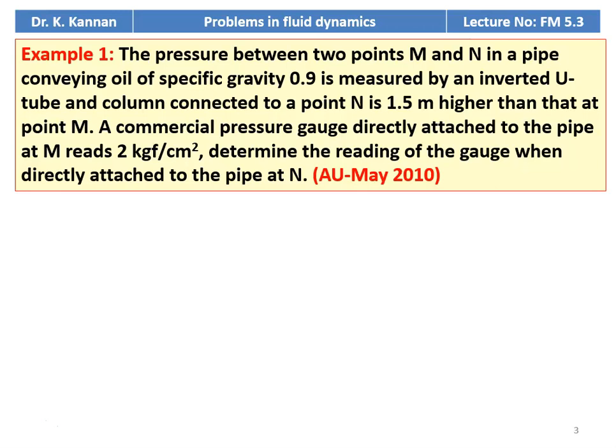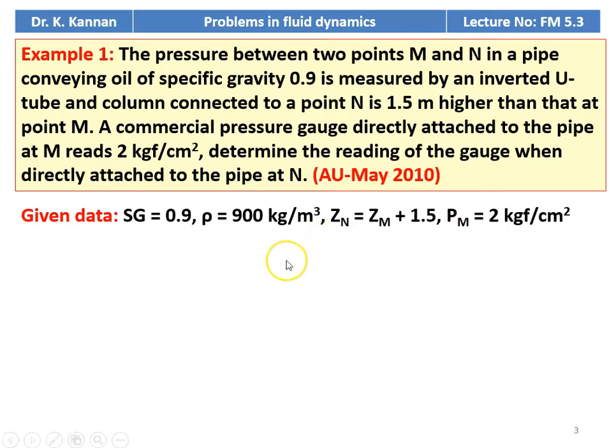Problem number 1 from May 2010 question paper. The pressure between two points M and N in a pipe conveying oil of specific gravity 0.9 is measured by an inverted U-tube. The column connected to point N is 1.5 meter higher than point M. A commercial pressure gauge directly attached to the pipe at M reads 2 kilogram force per centimeter square. Determine the reading of the gauge when directly attached to the pipe at N. The specific gravity is 0.9, so the density is 900 kilograms per meter cube.